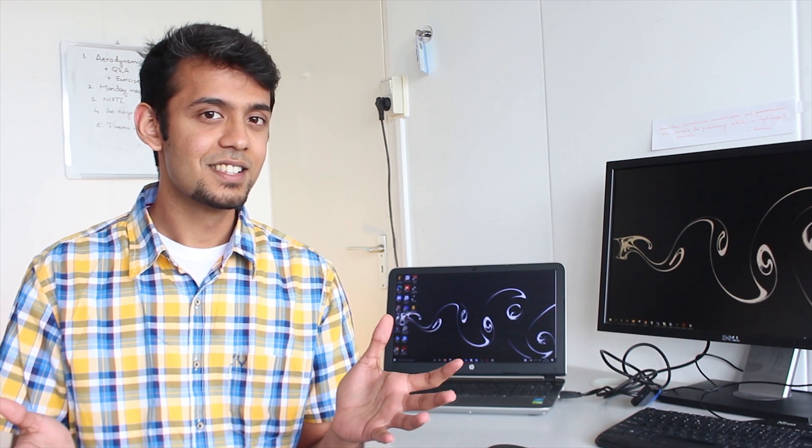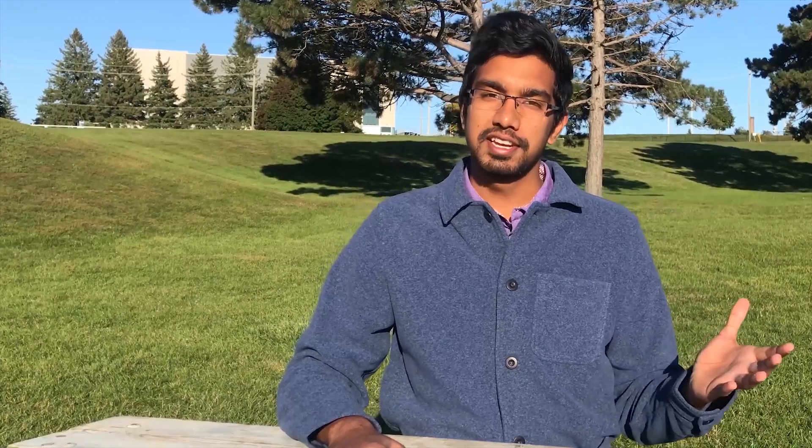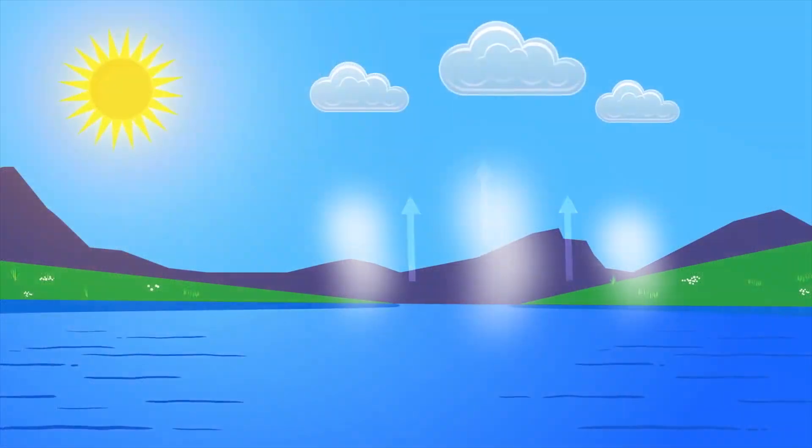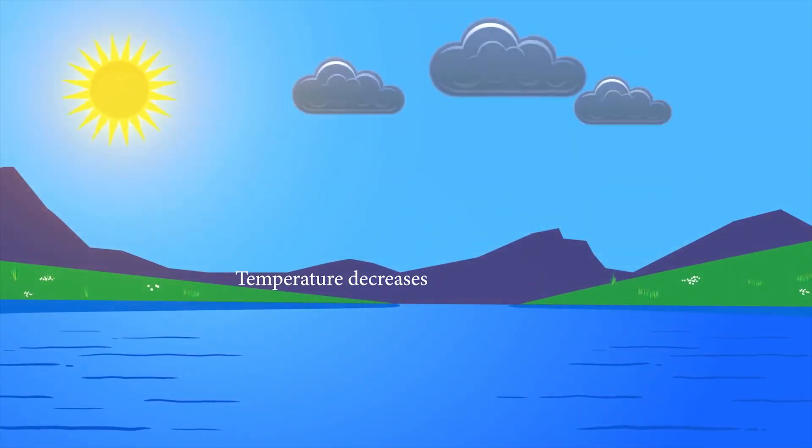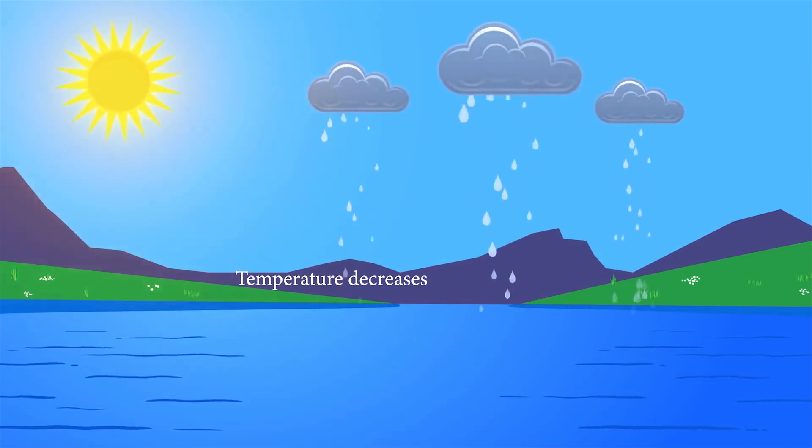To understand this, we will first have to go back to some primary school physics. Does the name water cycle ring a bell? Something we learnt in school about how water evaporates from the surface of the earth, rises up into the atmosphere, condenses and then falls back down as rain? Well, as it turns out, there's a little bit more to that story.